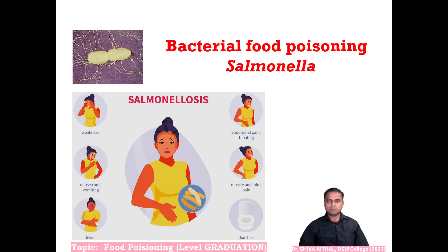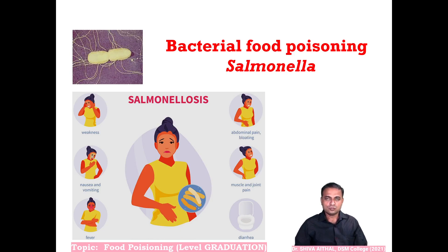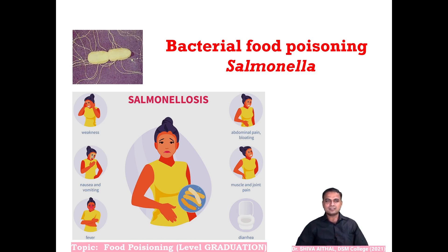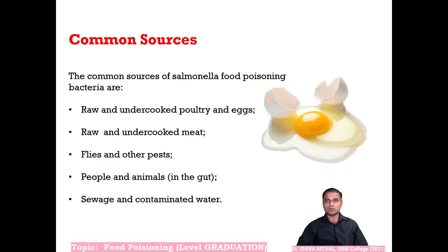Salmonella is a bacteria found in the gut of humans and animals — it is an intestinal organism. Food poisoning by Salmonella is called salmonellosis, resulting in weakness, nausea, vomiting, fever, abdominal pain, bloating, muscle and joint pain, and diarrhea.